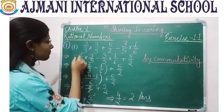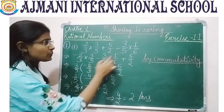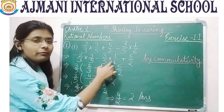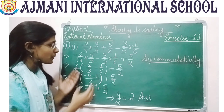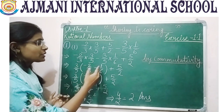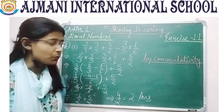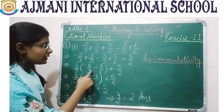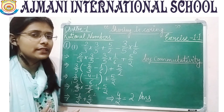By commutativity, minus 2 by 3 multiplied by 3 by 5 is written first, then in the second place we keep the third term: minus 3 by 5 multiplied by 1 by 6, plus 5 by 2. After that, 3 by 5 is common in both terms so we take it common, leaving minus 2 by 3 minus 1 by 6 in the bracket. By the BODMAS rule we solve the bracket first, taking LCM of 3 and 6 which is 6.